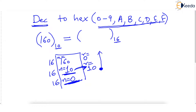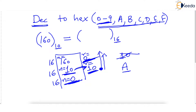We obtained two remainders: remainder 10 and remainder 0. When remainder 10 is printed, it's not printed as 10 on the screen — it will be printed as A, because digit 10 in hexadecimal is labeled A. We have 0 to 9, then 10 through 15, and 10 is labeled A. The next remainder going up is 0, and 0 will be printed as 0. So 160 in decimal is equivalent to A0 in hexadecimal.